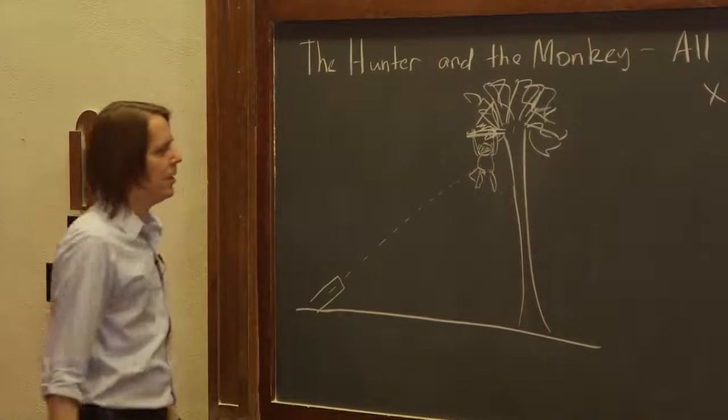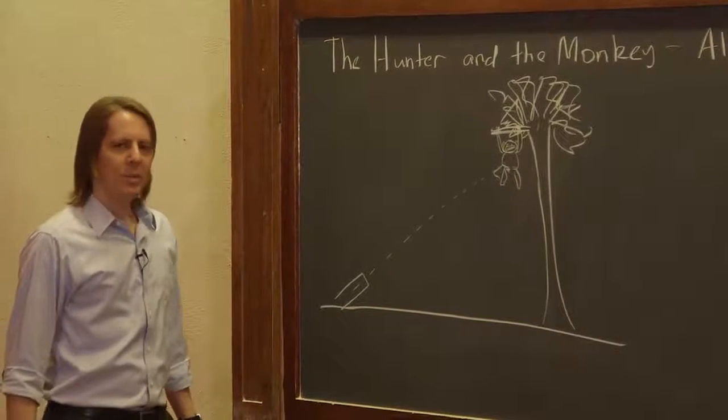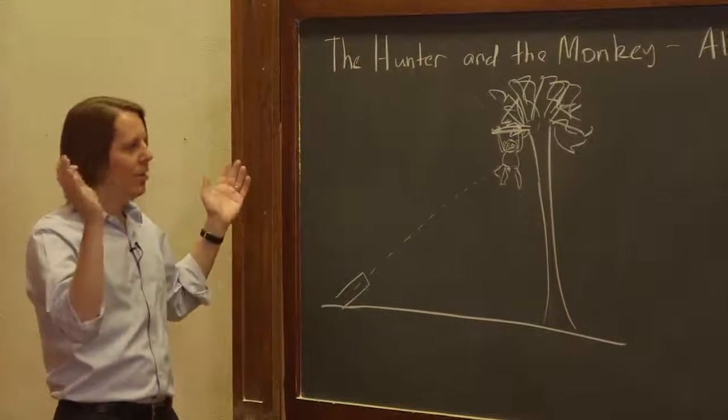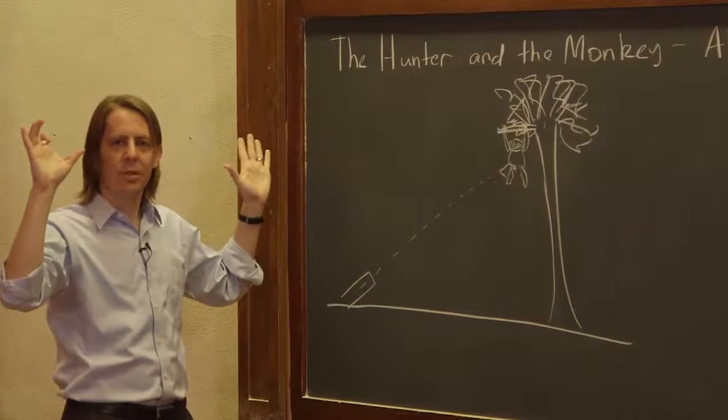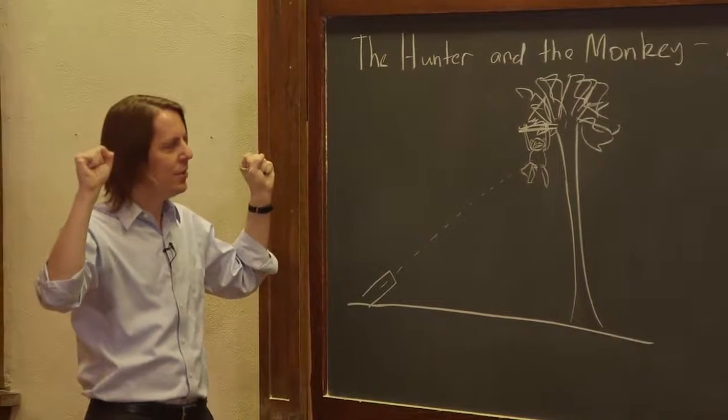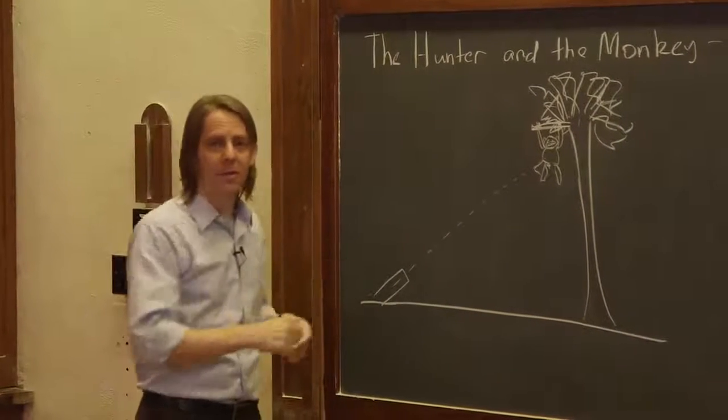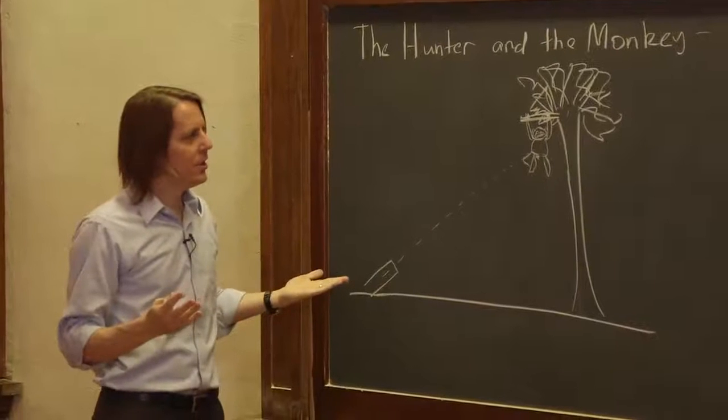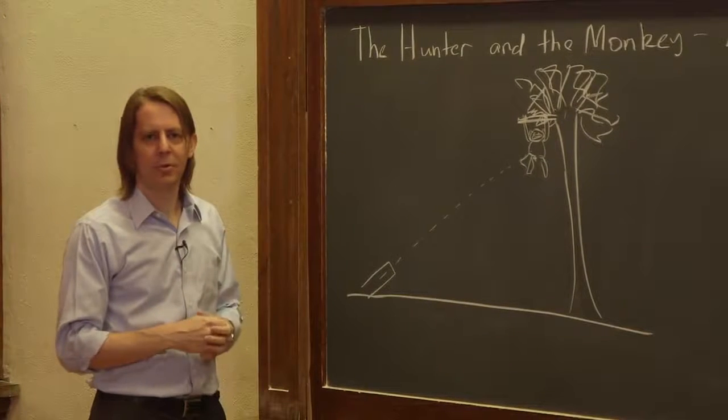What happens is he shoots the gun. Big loud bang. The monkey gets scared and lets go of the branch. So the instant he shoots, the monkey lets go. So we know the monkey is going to fall. And the question is, does the monkey get shot? That's what we're trying to figure out.